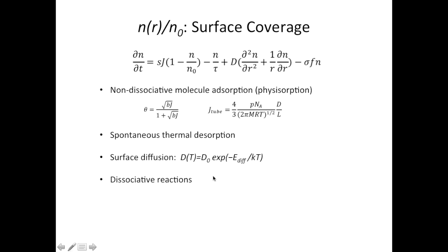The final parameter is the surface coverage of adsorbates. The surface coverage is both spatial and time dependent. There are four primary processes that can happen on the surface which cause the surface coverage to change. The first one is non-dissociative molecule adsorption, which is a kind of physisorption due to weak Van der Waals interaction. By solving for only this term, we can obtain the surface coverage theta, which is related to the flux of precursor gas. We also have the expression for the precursor gas flux at the tube exit — it's a product of both the effusion flux and the geometric factor.